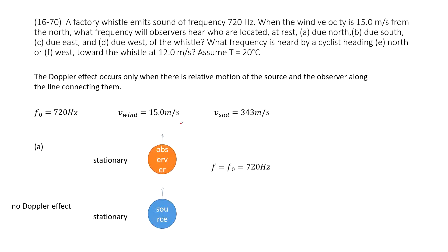Now let's see what quantities are given. The source frequency is 720 Hz. The source is stationary. We're also told the wind velocity is 15 m/s, and the temperature is 20 degrees Celsius. From this we can get the speed of sound in the air: 343 m/s. So we have three quantities.